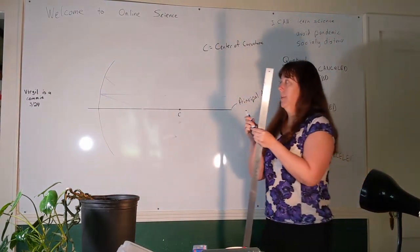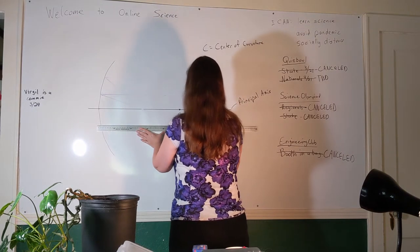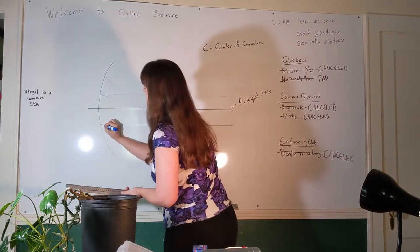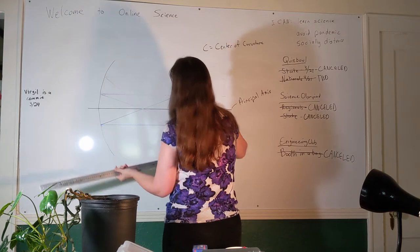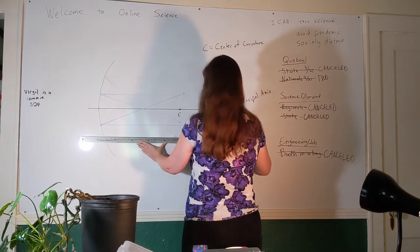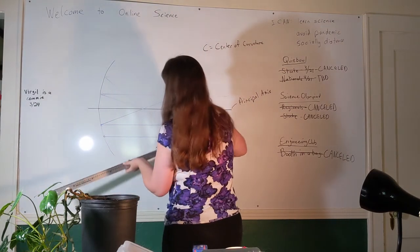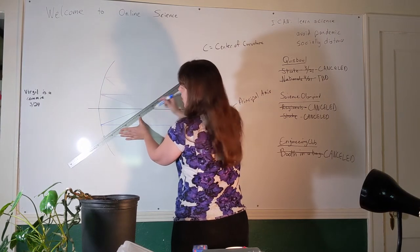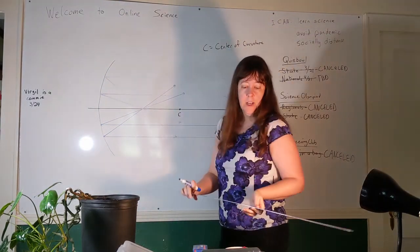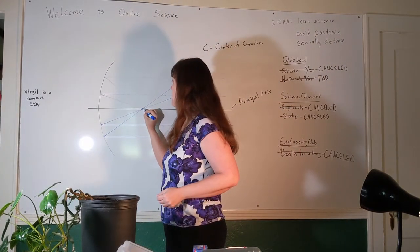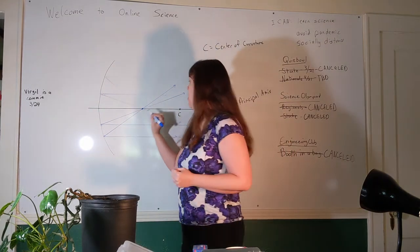If the light ray comes in below the principal axis, it's going to bend up toward the principal axis. And the farther it comes in from the principal axis, the more it's going to bend. What are you noticing? All of these reflected light rays are coming through the same point — they're all crossing at this point right here. The point where those light rays meet when light from a parallel source hits a curved mirror is called the focal point.